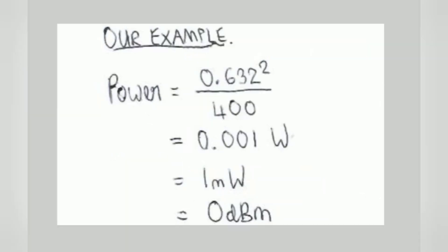So that's a very easy formula to remember. With 0.632 volts squared divided by 400, it comes out to 0.001 watts, very close, which is actually 1 milliwatt, the definition of 0 dBm. So surprisingly, when you look at the output on the oscilloscope and see 632 millivolts, that is exactly 0 dBm, which is what we were hoping for.